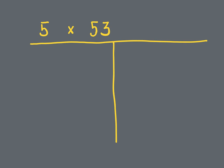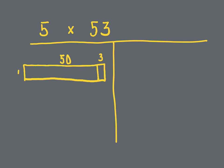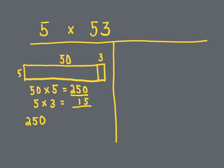5 times 53. We're going to make our area model. Here's my rectangle — it doesn't have to be to scale, but this right here represents the 3 ones, and this represents the 5 tens, which is 50, and we're multiplying by the 5. So: 50 times 5 — 5 times 5 is 25, add on your 0 — that's 250, our first partial product. Then 5 times 3 gives us 15, our second partial product. 250 plus 15 gives us 265 as our product.